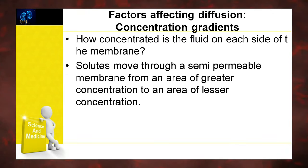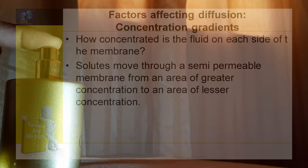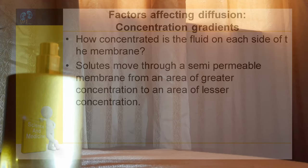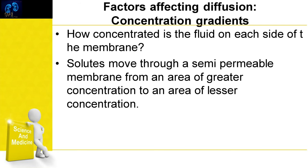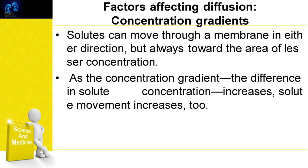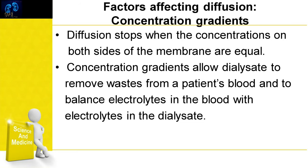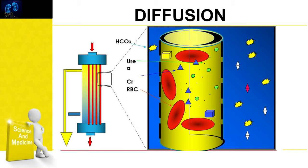Let's discuss factors affecting diffusion by the nature of the solution. The first factor is concentration gradient. As discussed, solute will move from an area of higher solute concentration to an area of lower solute concentration. Solute can move through a membrane in either direction but always toward the area of lesser concentration. Diffusion stops when the concentration on both sides of the membrane are equal. Concentration gradients allow dialysate to remove waste from the patient's blood and to balance electrolytes.